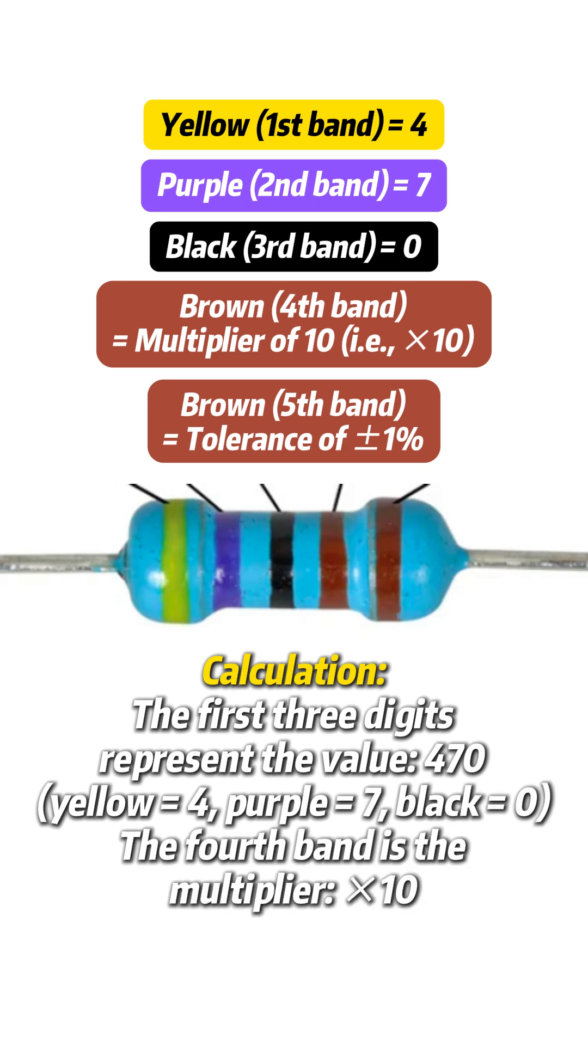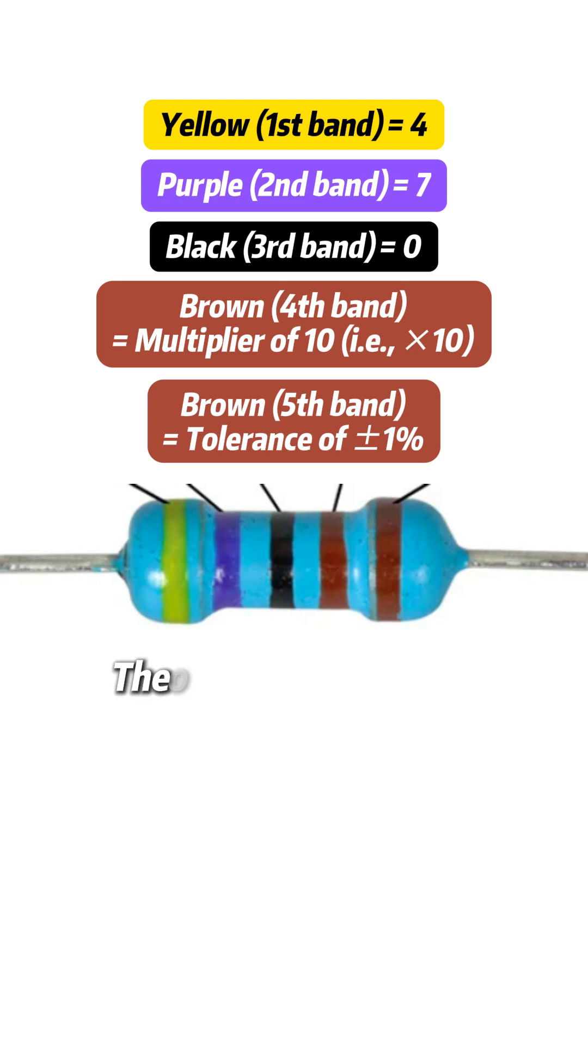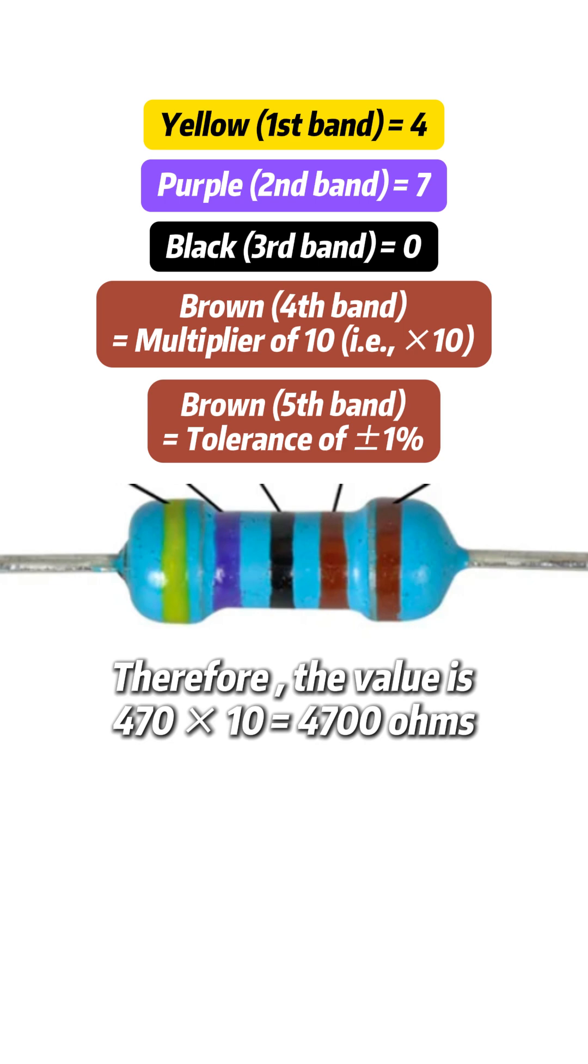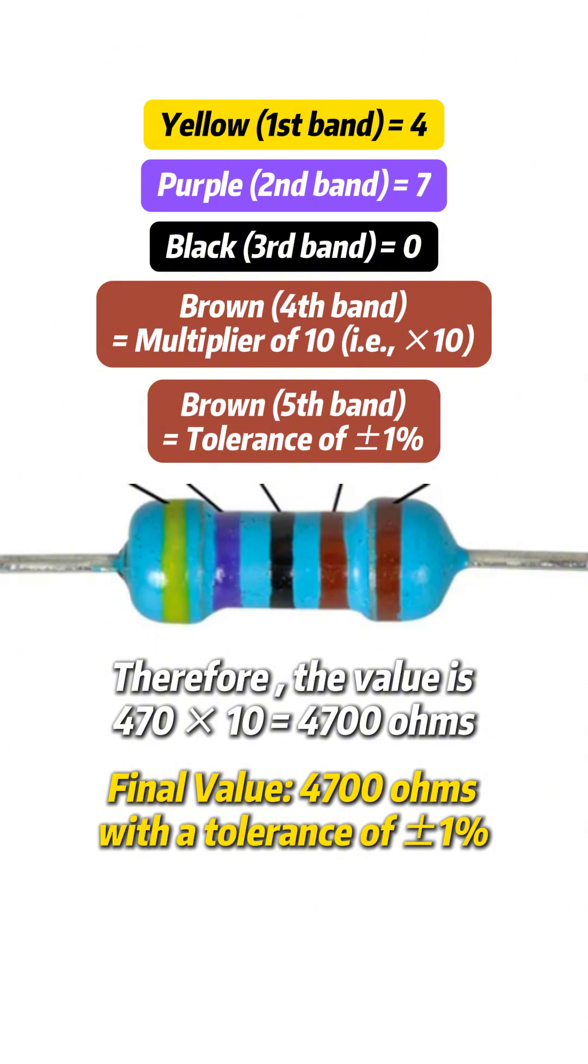The first three digits represent the value, 470. The fourth band is the multiplier, times 10. Therefore, the value is 470 times 10 equals 4,700 ohms. Final value: 4,700 ohms with a tolerance of plus or minus 1%.